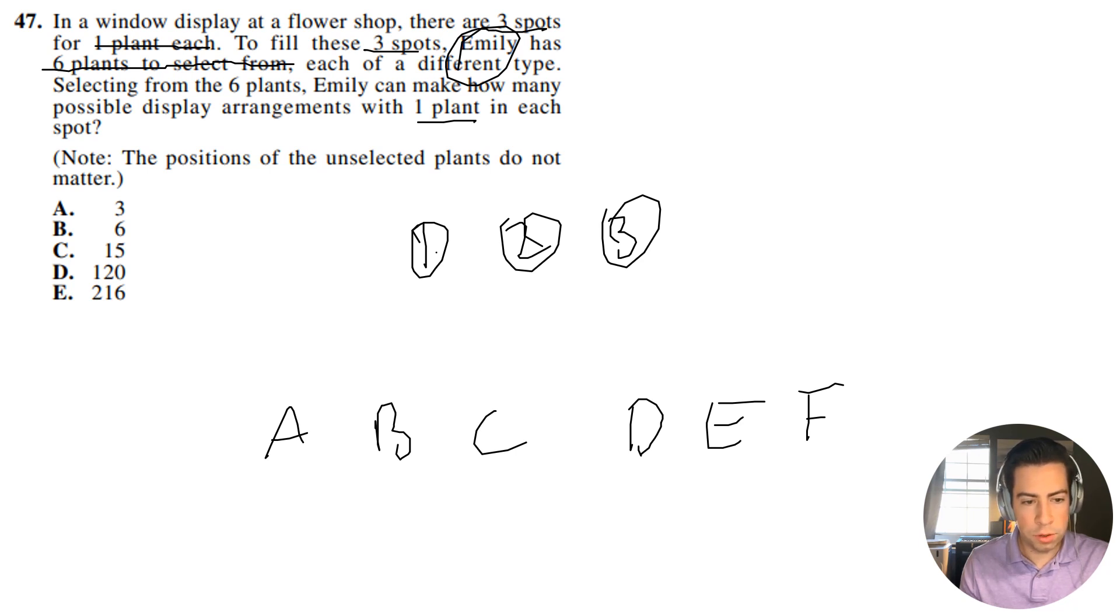All right, so what we can do is, well, if there's three spots here, I can put either A, B, C, D, E, or F. I can choose from all six of these options. So for one, I have six options to choose from.